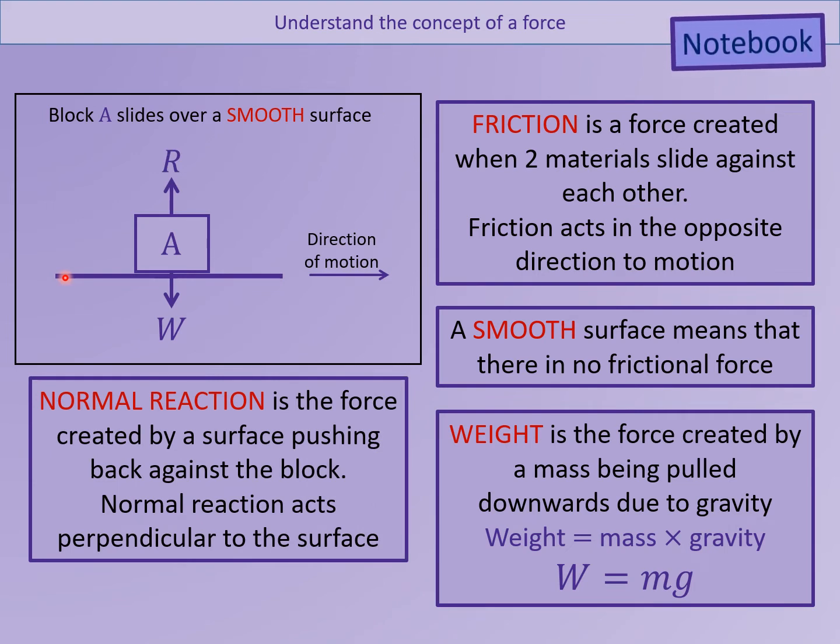The normal reaction is a force that is created by the surface which pushes back against the block. This stops the block from falling through the floor due to its weight force. The normal reaction always acts perpendicular to the surface. So in this case, because the surface is horizontal, the normal reaction is straight up vertical.